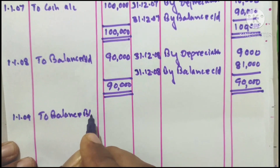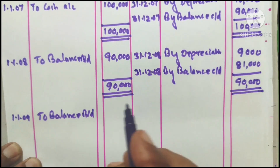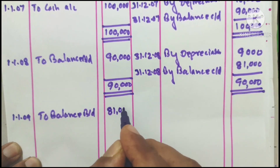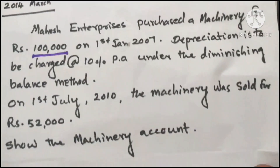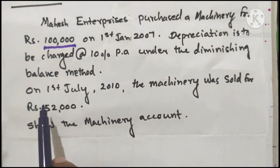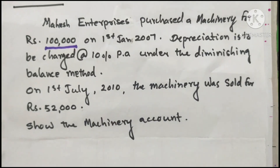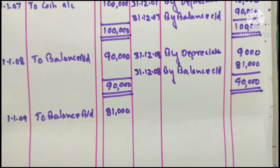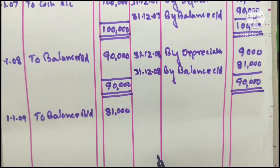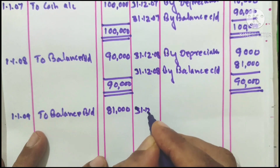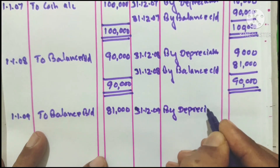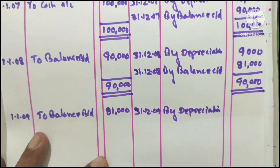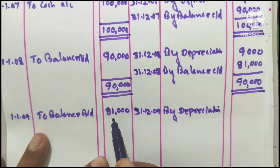Balance brought down is 81,000. No additional machinery purchase. For the year 2009, using the diminishing balance method at 10%, depreciation is 81,000 into 10 by 100, which equals 8,100.